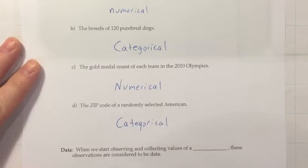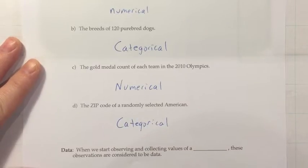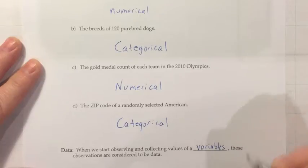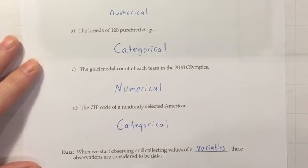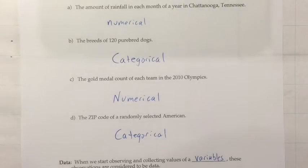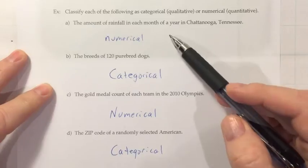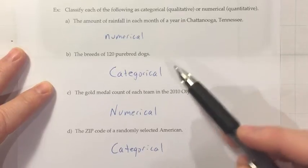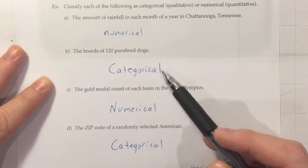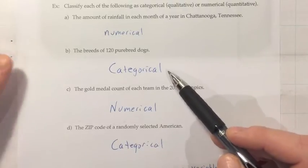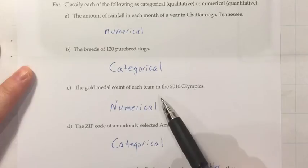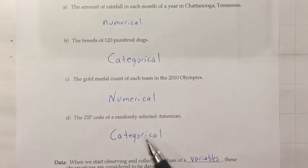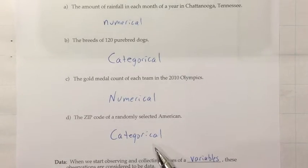Data: when we observe and collect values of a variable, these observations are considered data. To simplify: the question is the variable and the answer is a piece of data. For example, the amount of rainfall is the variable and 13.7 inches is a piece of data. The breed of dog is the variable and Lhasa Apso is a piece of data. Gold medal count is the variable and 42 gold medals is a piece of data. Zip code is the variable and 94545 is a piece of data.